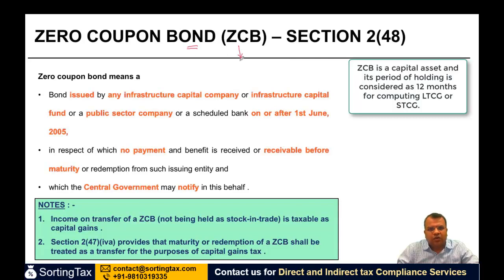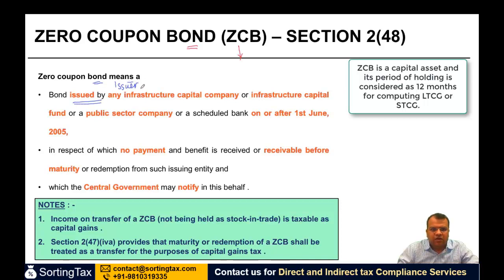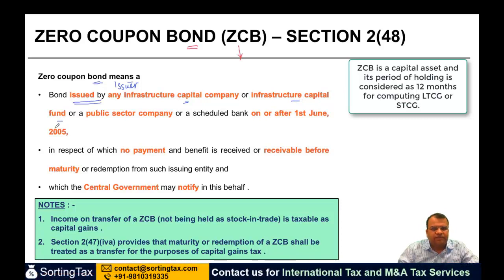It is important to understand what exactly a zero-coupon bond is. A zero-coupon bond means a bond issued by any infrastructure capital company, any infrastructure capital fund, public sector company, or a scheduled bank on or after 1st June 2005.